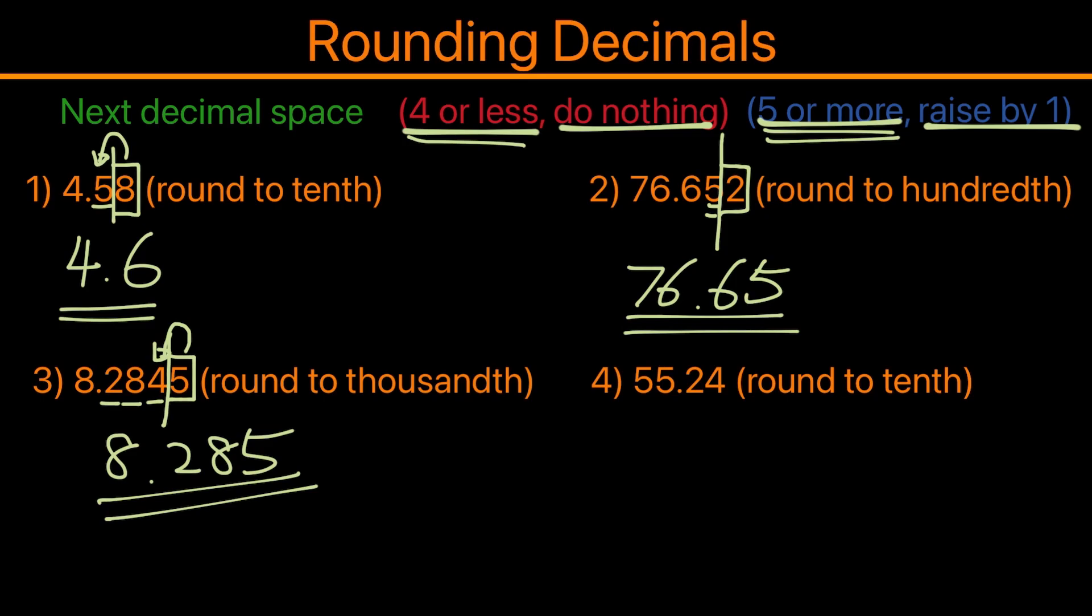Now for the fourth one: 55.24, and we're rounding to the tenth value. In this case, would be two. Looking at four, four is under four or less, so we don't do anything. And we will rewrite it as 55.2.